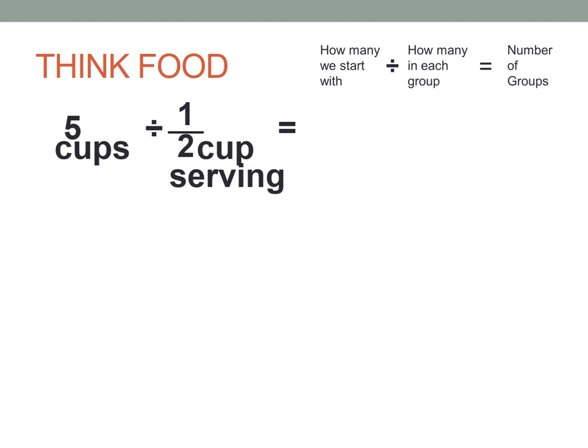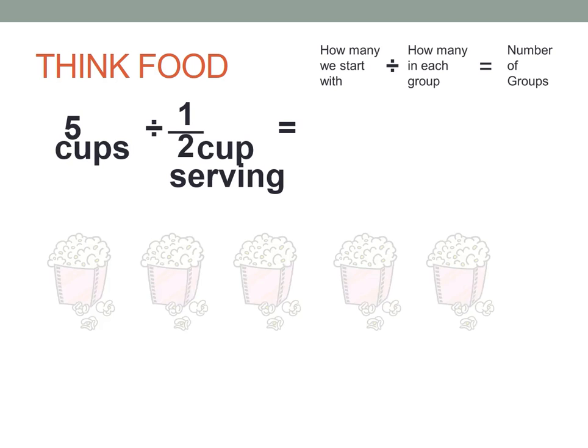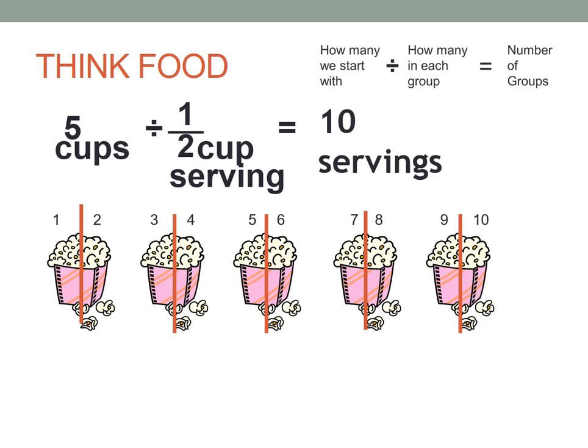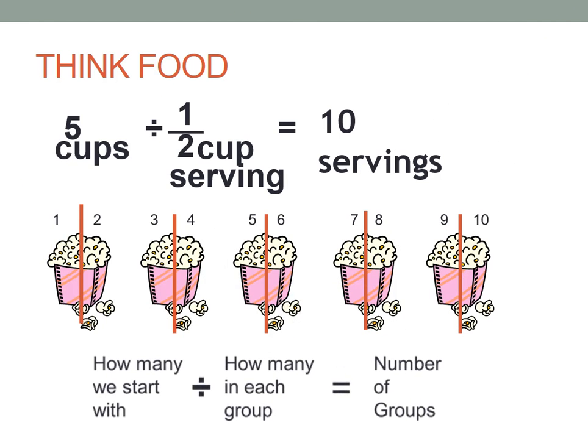And now let's put a fraction in here and see what happens. I've got 5 cups of popcorn, and each serving is a half a cup, so how many servings do I have? Let's cut all these bags of popcorn in half, and you can see I've got 10 servings, 5 divided by a half would be 10. So that's what it visually looks like, and this is how we need to think about it: how many we start with, divided by how many in each group, and that gives us the number of groups.